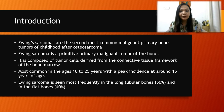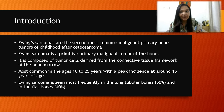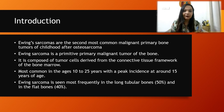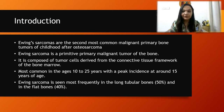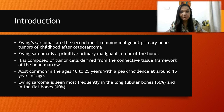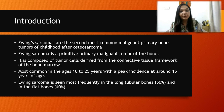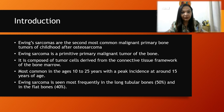Ewing Sarcomas are the second most common malignant primary bone tumours of childhood after osteosarcoma. It is a primitive primary malignant tumour of the bone which derives the tumour cells from the connective tissue framework of the bone marrow.